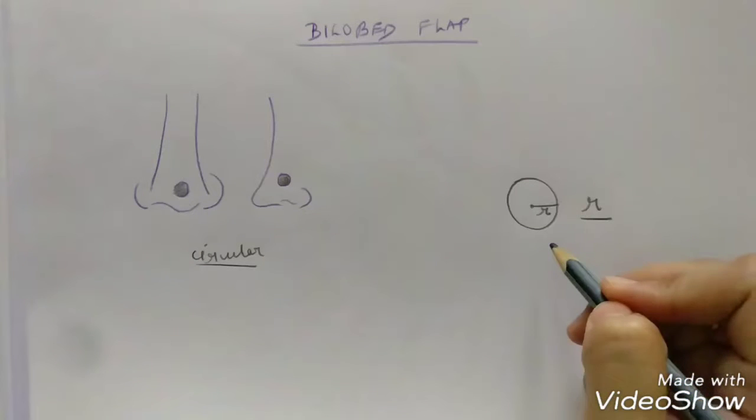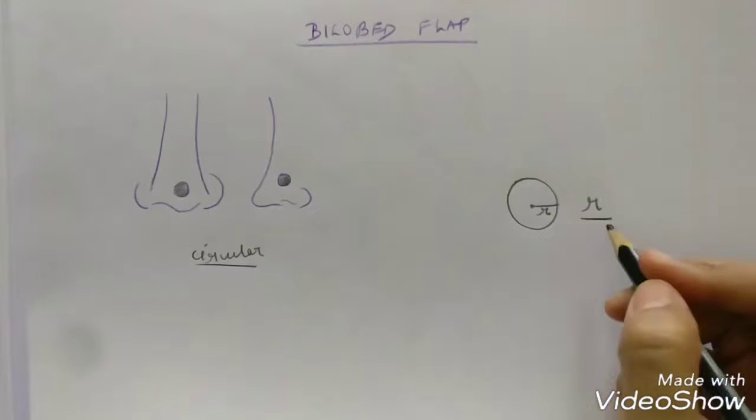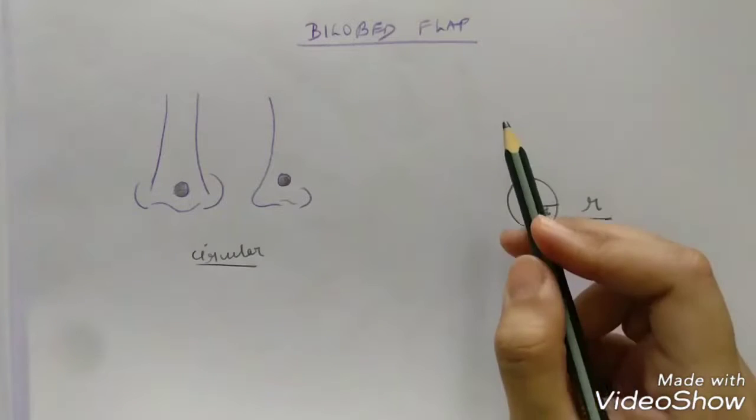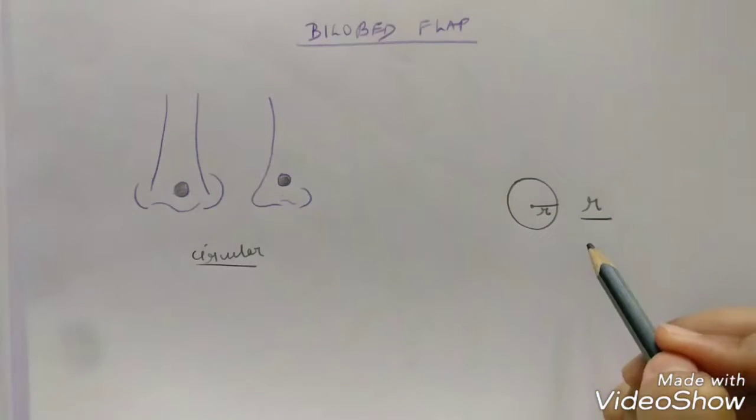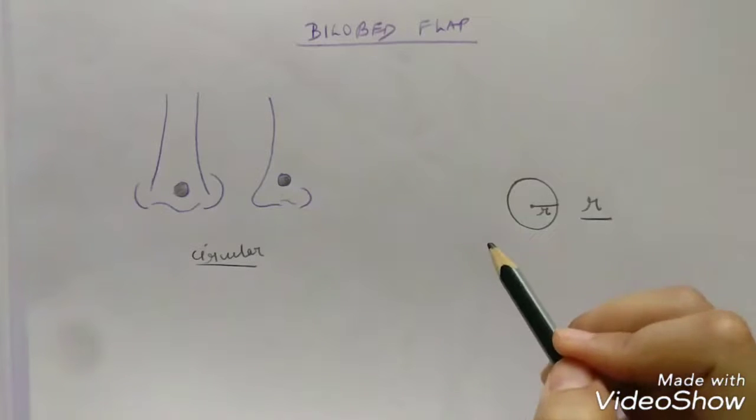After the radius of the defect, it is important to find out the pivot point. Depending on where you have your maximum skin laxity, that side we will be planning the flaps and that is where the pivot point shall fall.